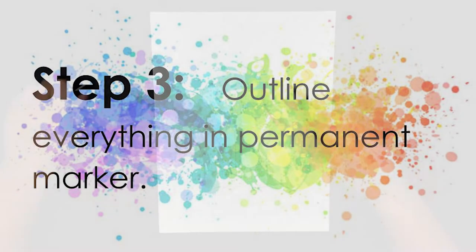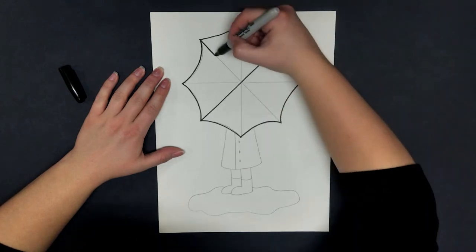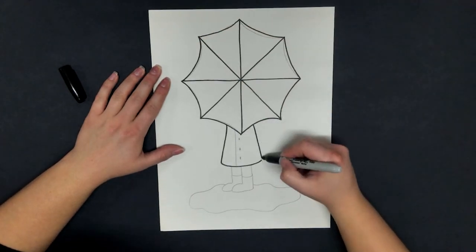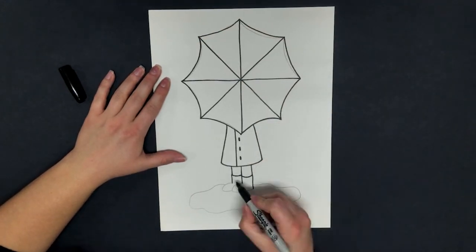Now, go back with a permanent marker and outline all of your pencil lines. It's very important that it is a permanent marker as we will be using watercolor later.